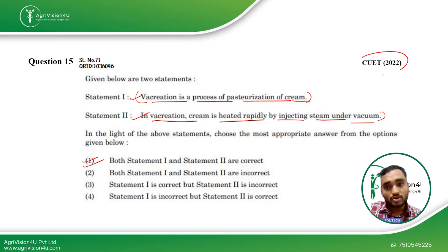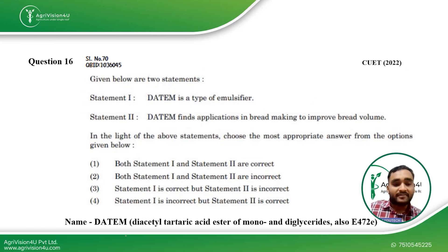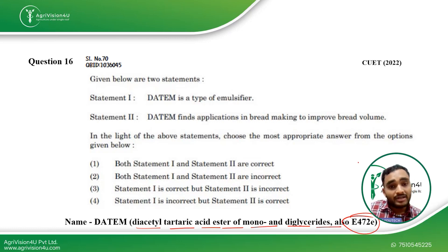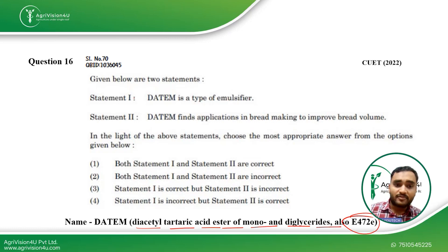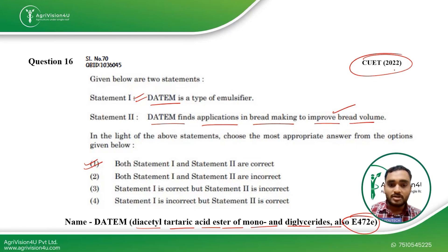Coming to Question 16: DATEM — diacetyl tartaric acid ester of mono and diglycerides, also known as E472 — is a very common food additive used in bakery products to improve bread quality. Some bromides are also used but are not permitted in foods. DATEM is a type of emulsifier — correct. DATEM finds application in bread making to improve bread volume — also correct. Both statements are correct, making the first option the right answer. This question was also asked in CUET 2022.